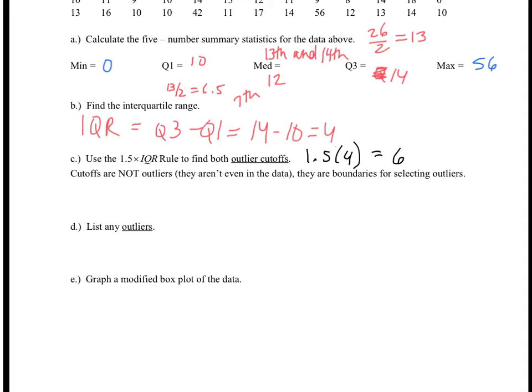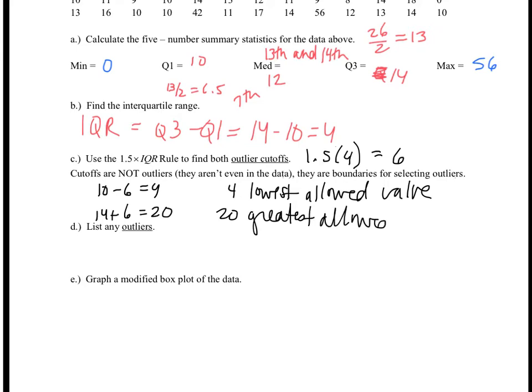So, what that means is that I'm allowed to go 6 units below my Q1, 10 minus 6, which is 4, and 6 units above my Q3, which gives me 20. So, what this tells me is that 4 is the lowest allowed value, and 20 is the greatest allowed value.